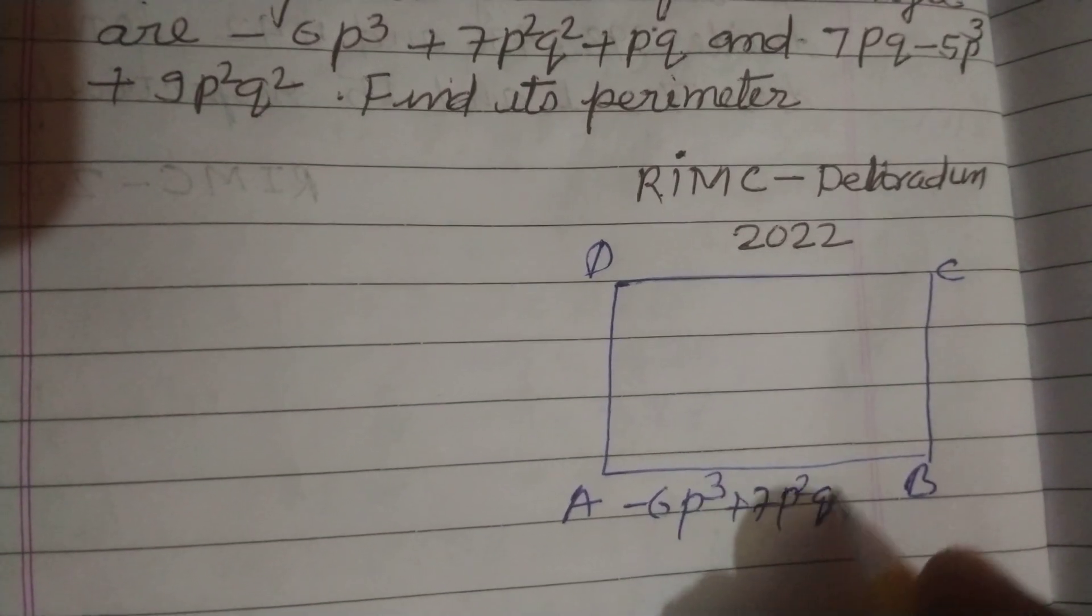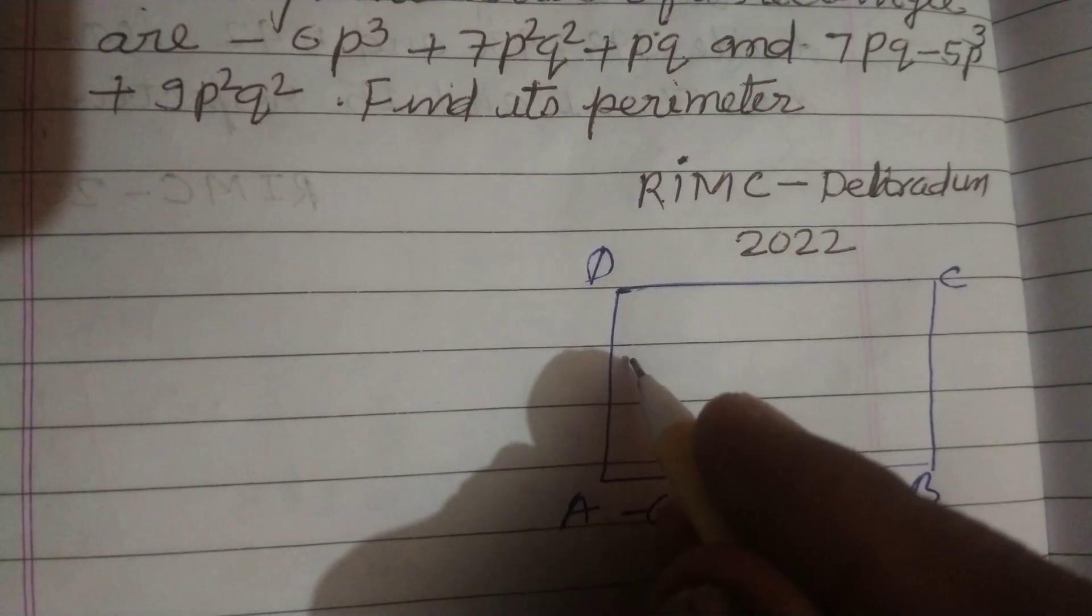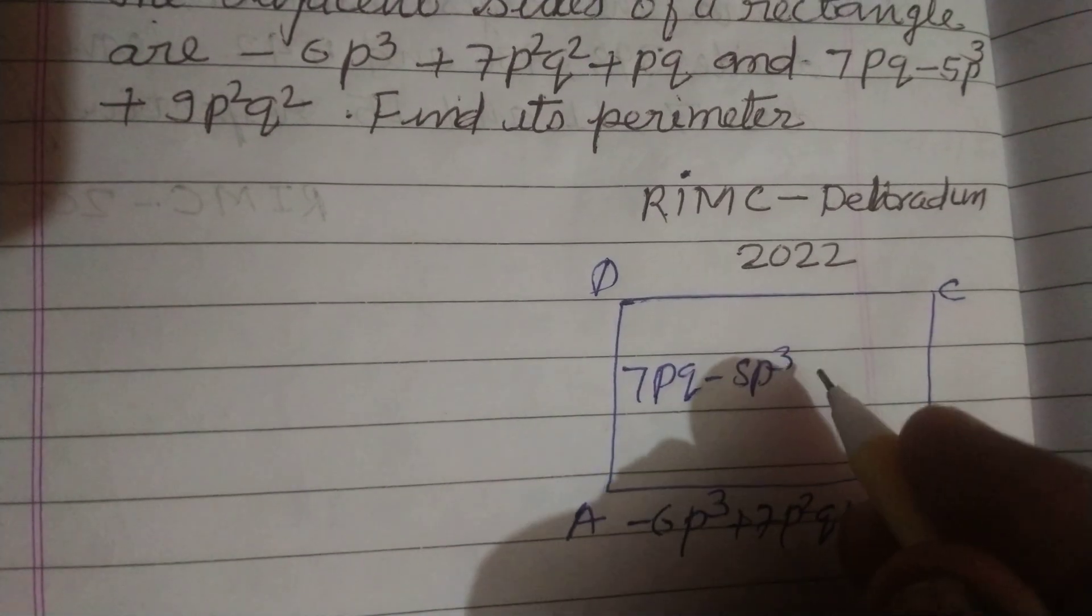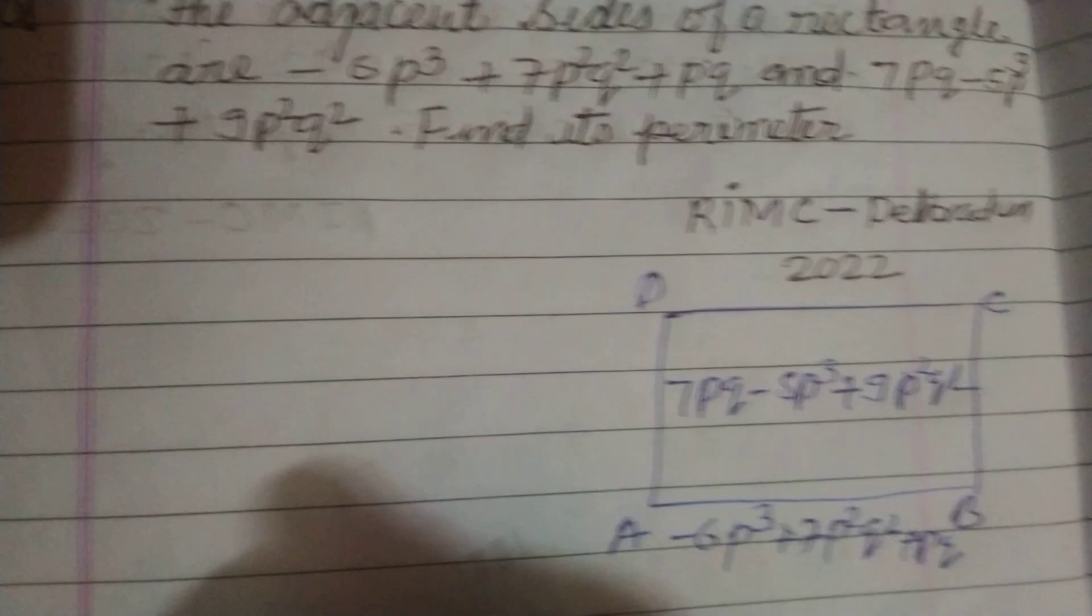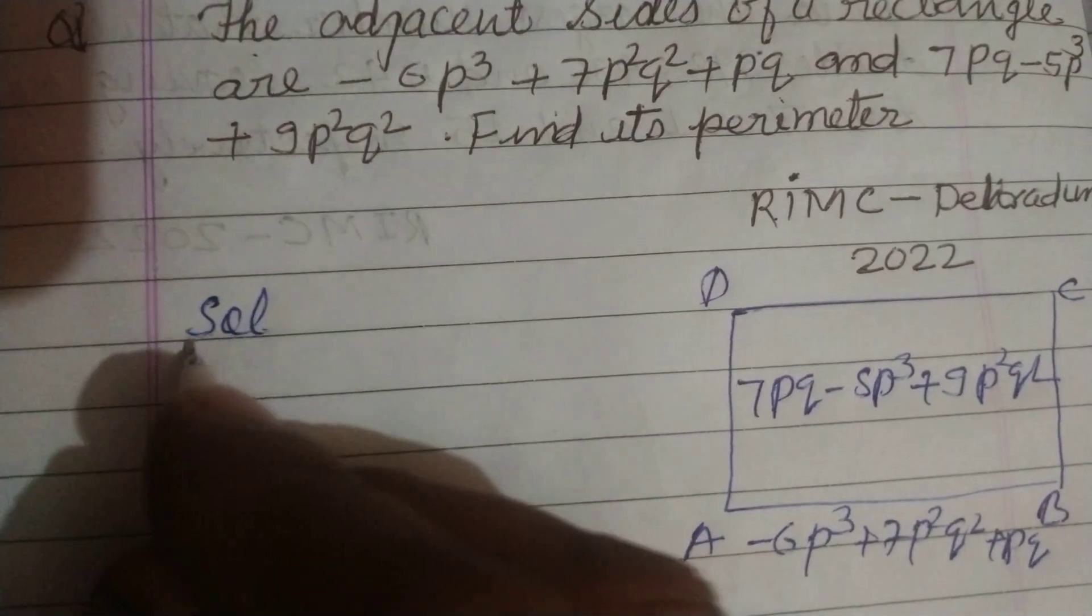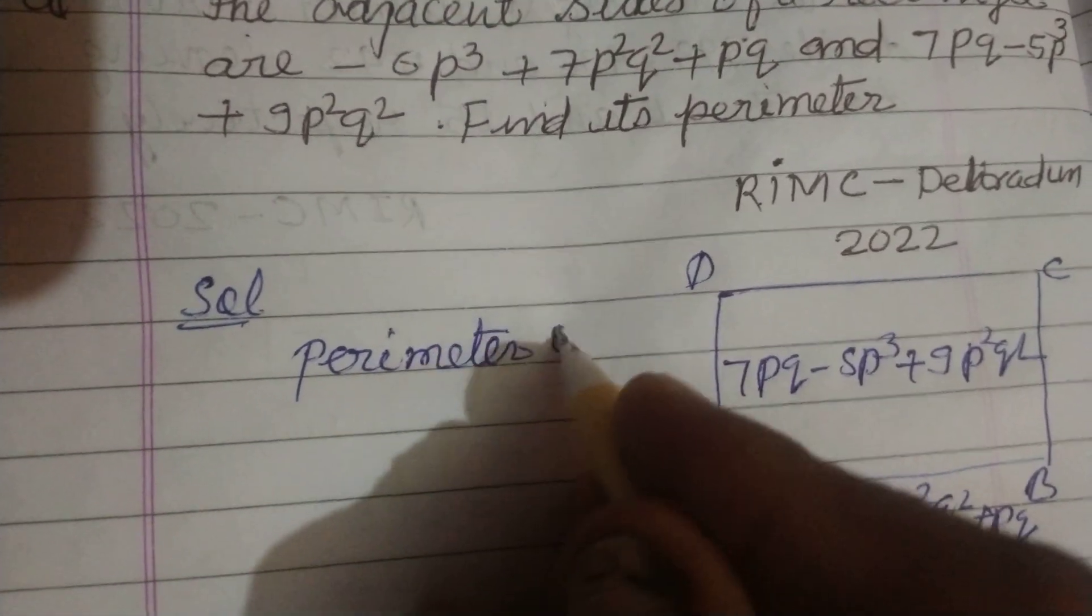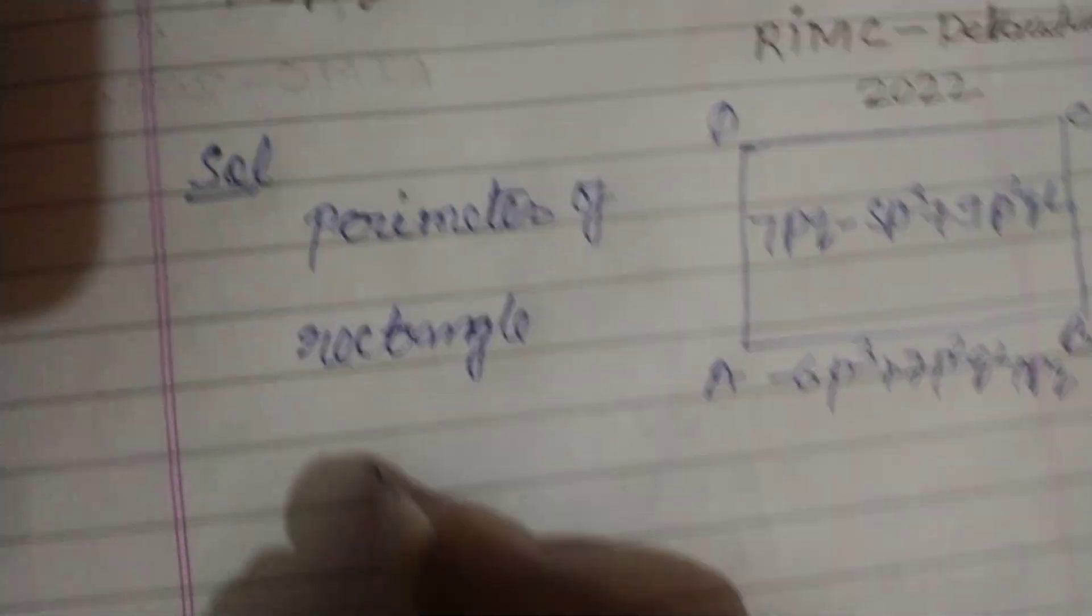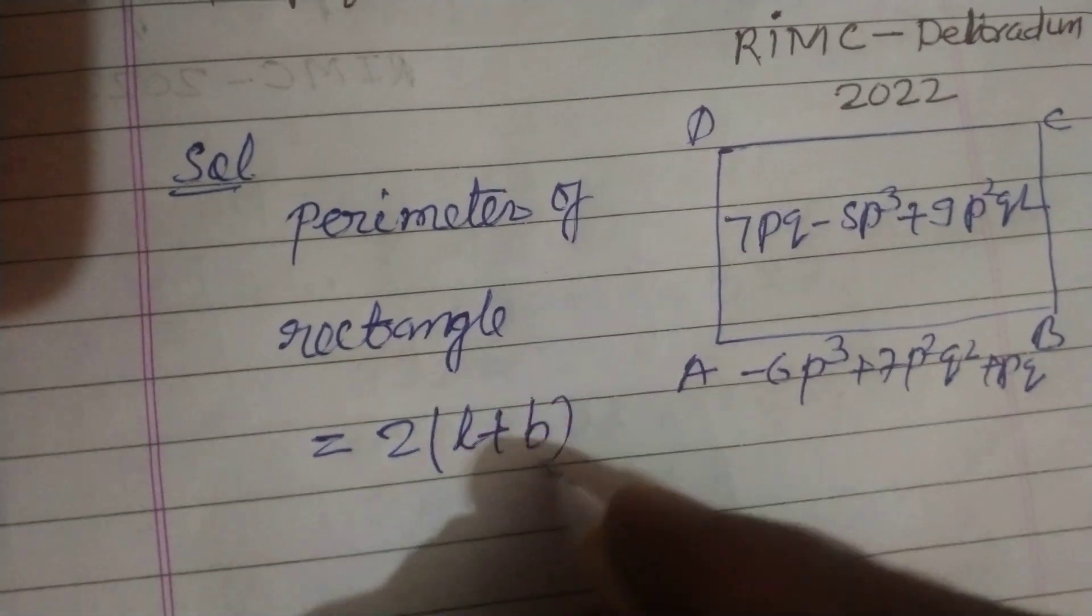and 7PQ - 5P³ + 9P²Q². You know that perimeter of a rectangle equals 2 times the sum of length and breadth.